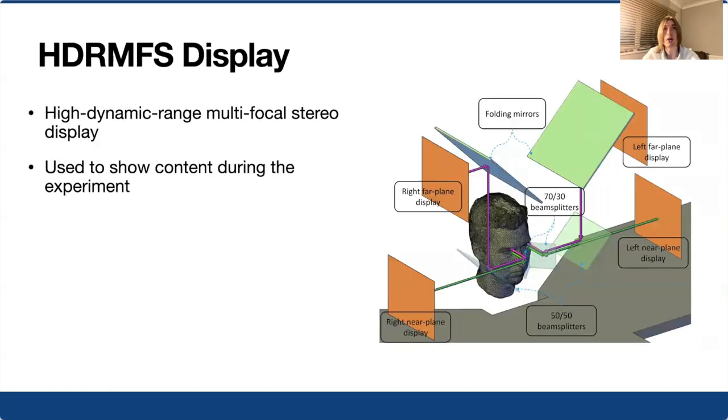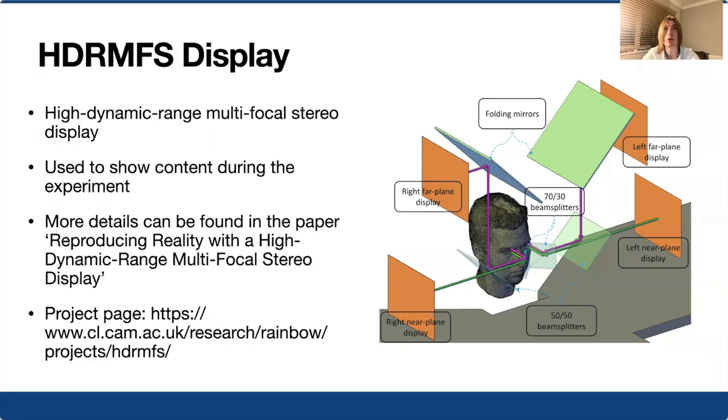In this study, we used a high dynamic range, multifocal stereoscopic display with two display planes. This display is capable of presenting highly realistic content, which in previous work has been found to be visually indistinguishable from real world scenes. More details of this display and its capabilities can be found in the paper, Reproducing Reality with a High Dynamic Range Multifocal Stereo Display, presented at SIGGRAPH Asia in 2021, or by following the link in this slide.